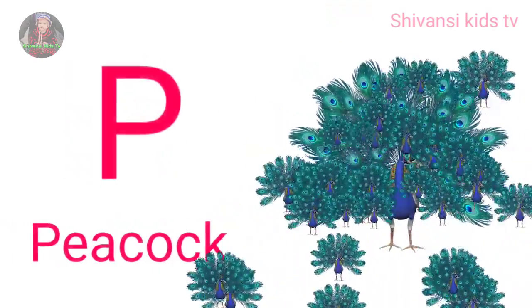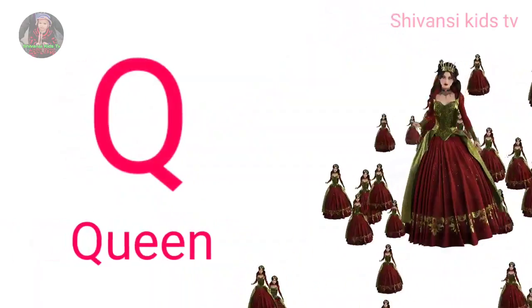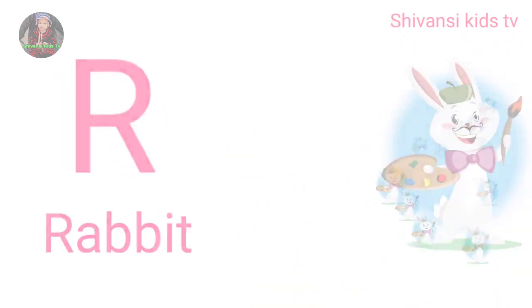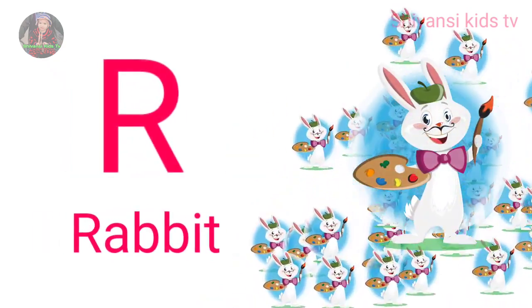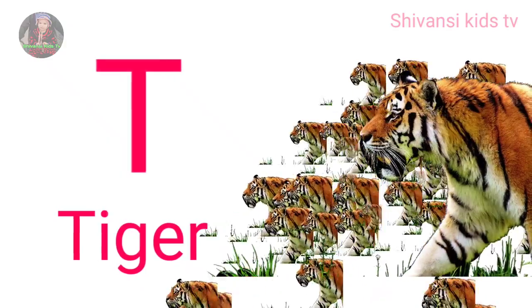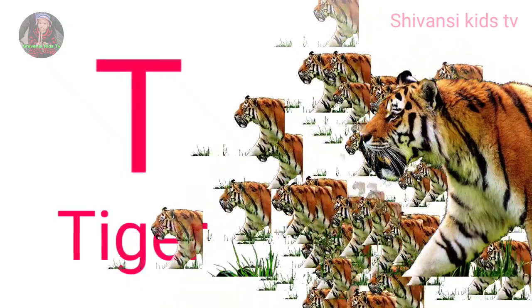P for peacock, Q for queen, R for rabbit, S for sheep, T for tiger.